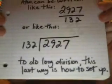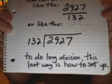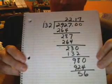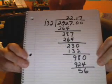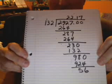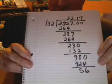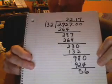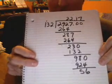To do long division, this last way is how to set it up. Here's how you set up the problem. You start off by looking at the first segment of numbers, the 292, and you think to yourself: how many times does 132 go into 292?